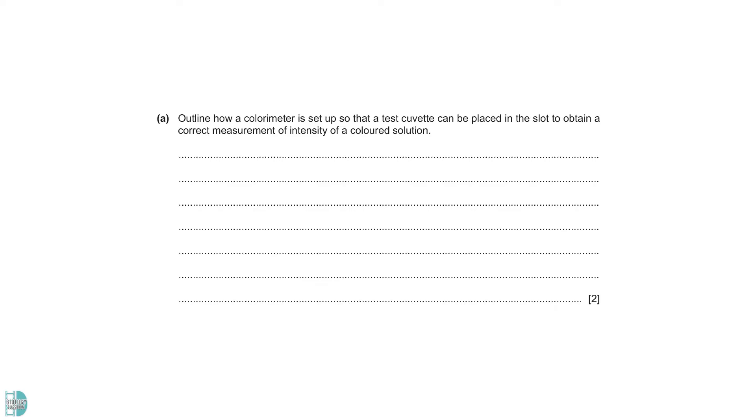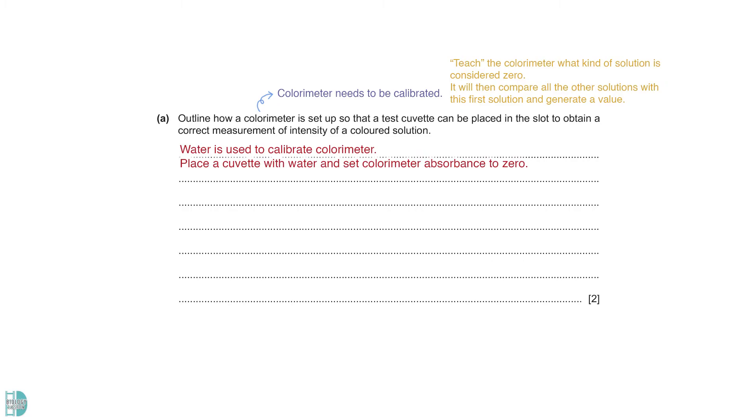Outline how a calorimeter is set up for a correct measurement of the intensity of a colored solution. Before we can use a calorimeter, we need to calibrate it. This is to teach the calorimeter what kind of solution is considered zero. It will then compare all the other solutions with this first solution and generate values for them. In this experiment, water is used to calibrate the calorimeter. We can do so by placing a cuvette with water into the calorimeter and setting the absorbance to zero. Another thing that is usually done is that we can use a colored filter. This is to set the wavelength we want to use in the experiment.